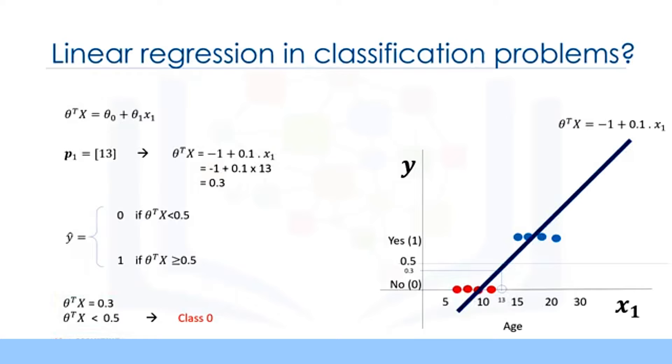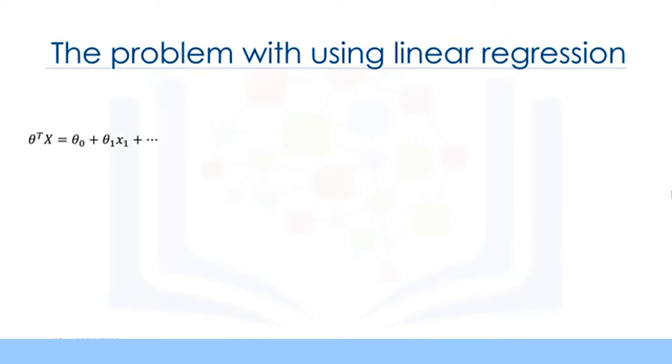But there is one problem here. What is the probability that this customer belongs to class 0? As you can see, it's not the best model to solve this problem. Also, there are some other issues which verify that linear regression is not the proper method for classification problems. So, as mentioned, if we use the regression line to calculate the class of a point, it always returns a number, such as 3 or negative 2, and so on.